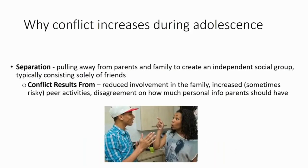There are several processes that occur during the teenage years that can explain some of the reasons why we see increased parenting conflict during this time. The first of these processes is referred to as separation. Separation is the process of teens pulling away from their parents and their family in order to create a more independent social group, which typically consists largely or solely of their friends and peers.